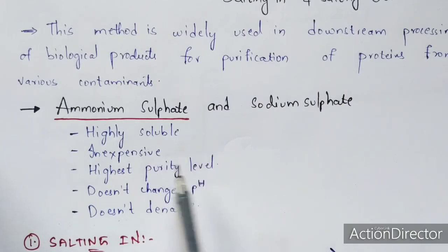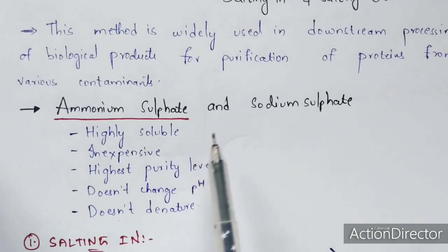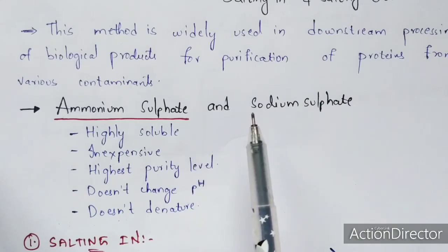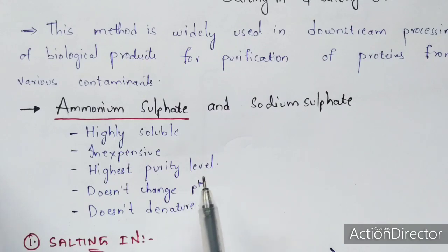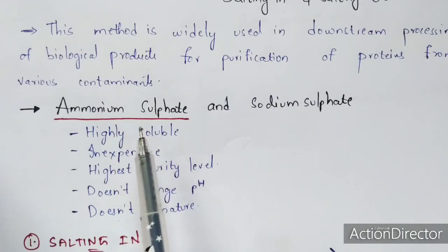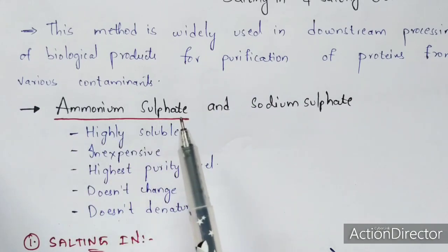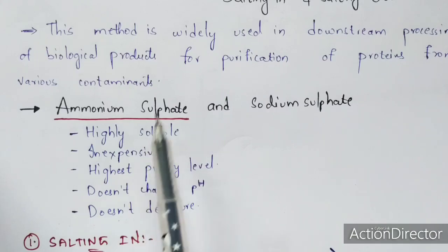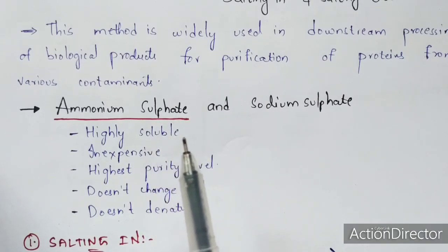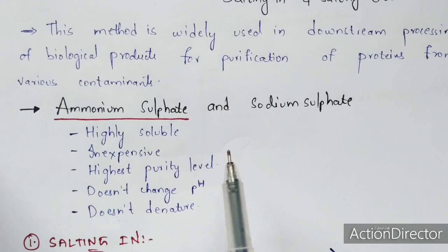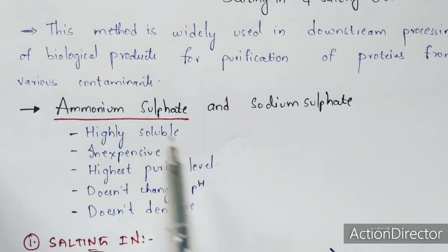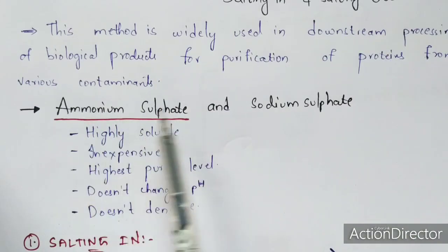Denaturation is the conversion of the quaternary structure into the primary structure. In this precipitation process, if quaternary structures of proteins are present, only the pure form of quaternary structures will be obtained — not primary structures — because denaturation does not occur here. Because ammonium sulfate is used, denaturation of proteins will not occur. If instead any chemical is introduced into the precipitation process, then the proteins will immediately get denatured. To prevent that, we use ammonium sulfate salt.